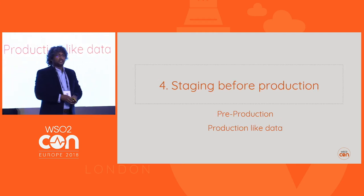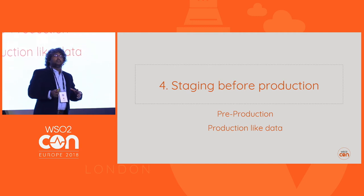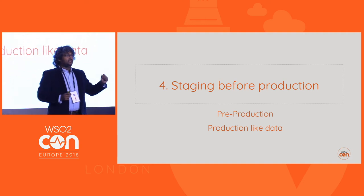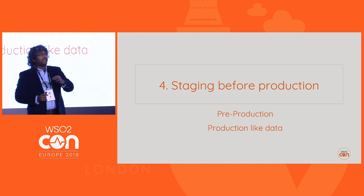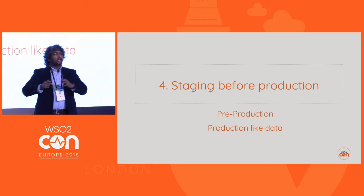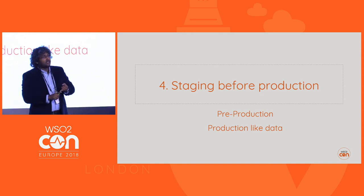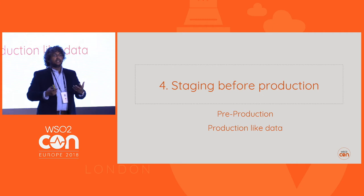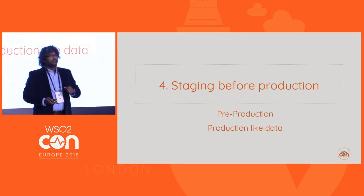Number four: staging before production. One common mistake most people make when building pipelines is they don't have a production-like environment with production-like data. It's very important to run your code through a production-like environment — architecturally production-like and against production-like data. When I say production-like, it doesn't have to be the exact data set from production; it can be a simulated data set, but in terms of types and sizes it should match and be identical to production. Having a production-like environment with production-like data is critical.